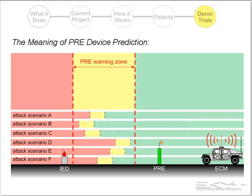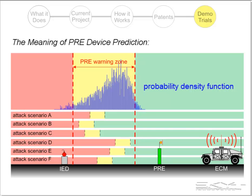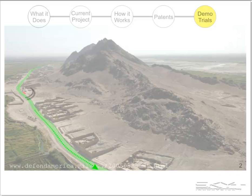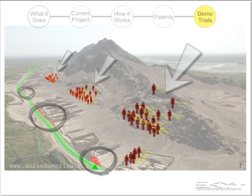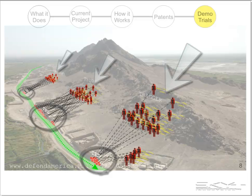For any technical people out there: the protection ranges form a probability density function, and the PRE device defines the warning zone to include, for example, 95% of the possible protection ranges. The variation in the observed protection range is caused by uncertainty about the attack scenario, threat characteristics, antenna height and gains, and virtually all other parameters that affect the ECM protection range.